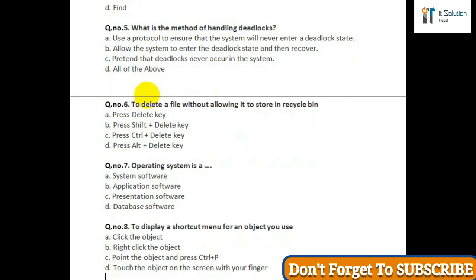Question number eight: To display a shortcut menu for an object you use — option A: click the object; option B: right-click the object; option C: point the object and press Ctrl+P; option D: toss the object on the screen with your finger.